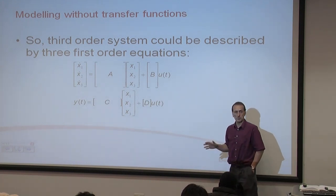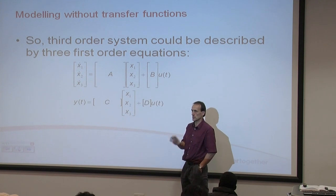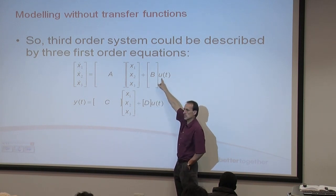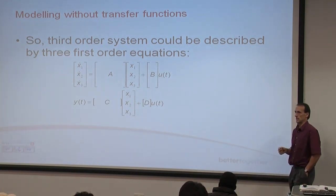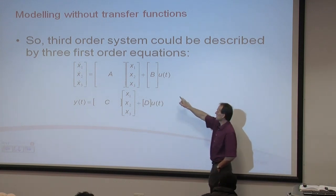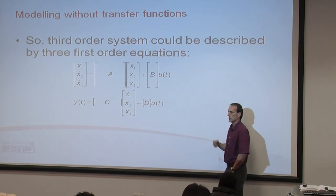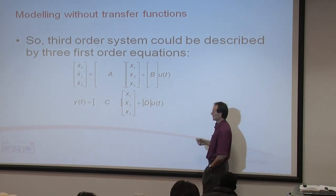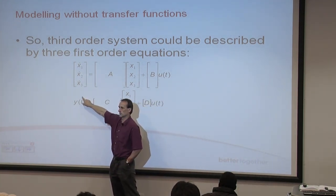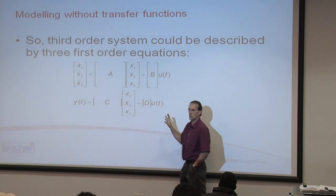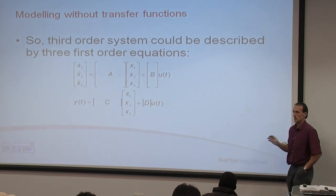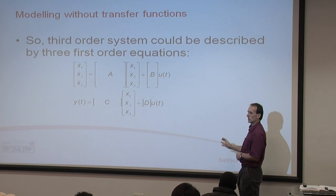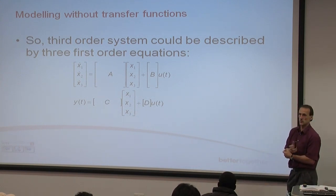We're not going to do any of these — we haven't got time in this module — but you can see it's a different way of representing things. The key thing is: if you know enough matrix algebra, we could make the input scalar u into a vector, incorporating more than one input quantity at the same time. Similarly, if we turn the output into a vector y1, y2, y3, we can express more than one output. By building these first-order equations in this particular matrix form, we can relate multiple inputs to multiple outputs.